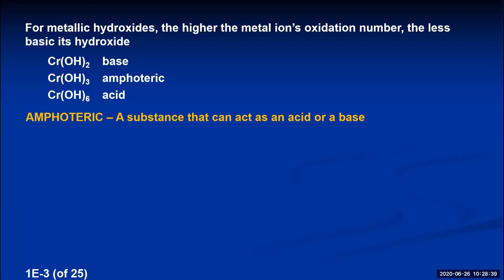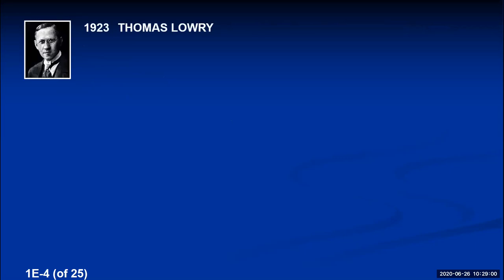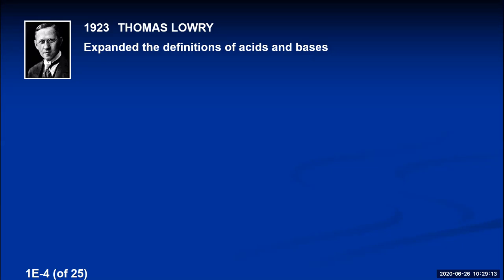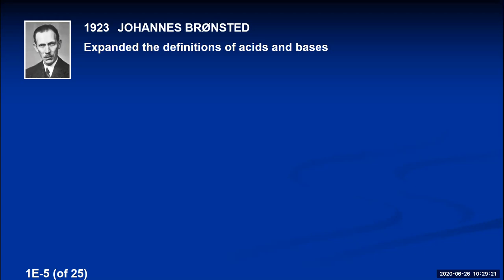A moment ago we said ammonia is a weak base. The fact that ammonia is a base troubled Svante Arrhenius and chemists of the time, because they couldn't explain why a covalent compound like ammonia should be a base — it doesn't have a hydroxide in its formula. The answer came in 1923 from chemists Thomas Lowry and Johannes Bronsted, who expanded the definitions of acids and bases. These are commonly called the Bronsted-Lowry definitions, though both chemists contributed.